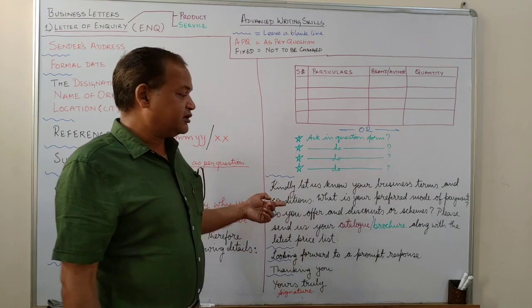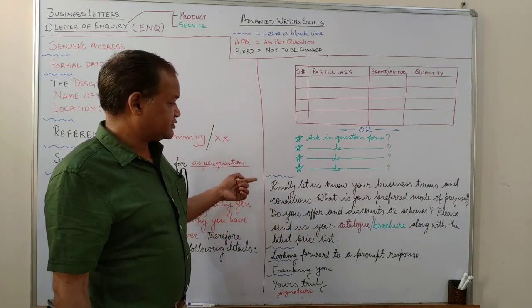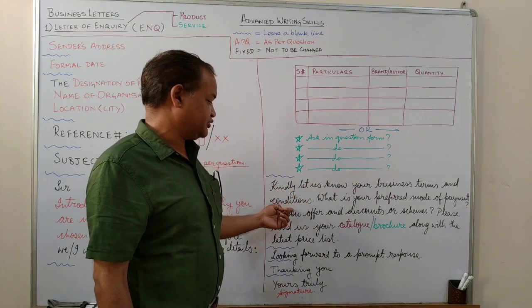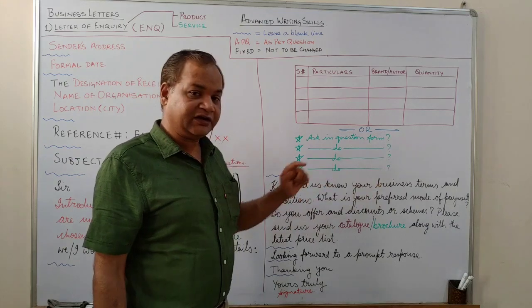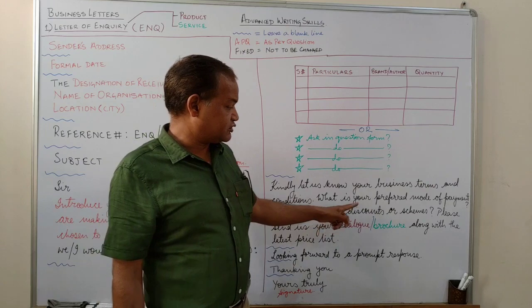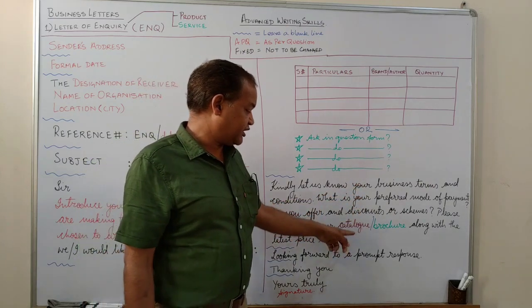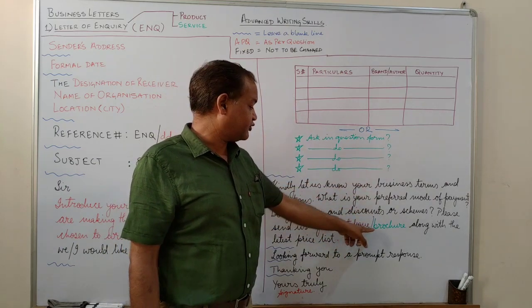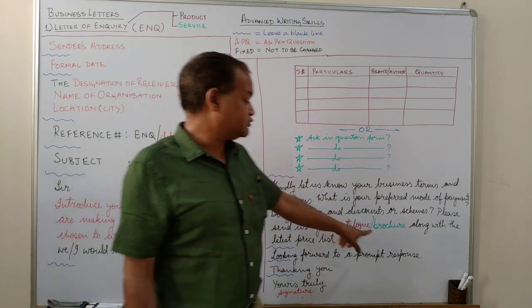After that, you leave a line and you move to the third paragraph and the final paragraph of a business letter of inquiry. So it's simple. You have to ask four things, four details. Kindly let us know your business terms and conditions. Then what is your preferred mode of payment ending in a sign of interrogation or question mark. Do you offer discounts or schemes? Question mark. Please send us your catalog or brochure. Now, catalog is for products. Brochure is for services.